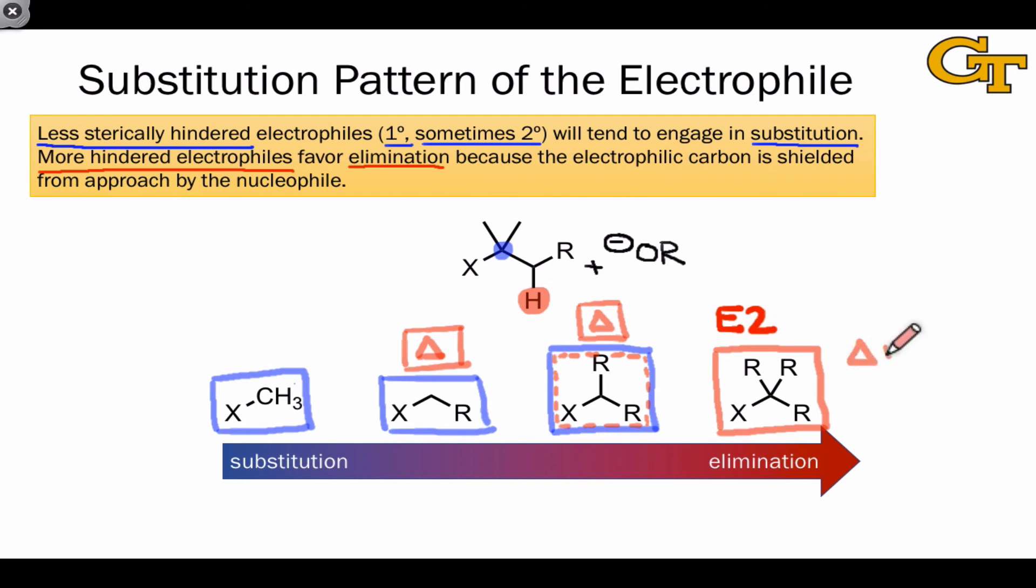Using heat plus a weak base, something like HOR, also tends to encourage elimination in the tertiary case. But the mechanism here is now E1, since the base isn't strong enough to deprotonate at the beta position on its own. Here we're using a relatively weak base, a neutral alcohol. It's the heat, the use of heat that drives elimination over substitution in a case like this.